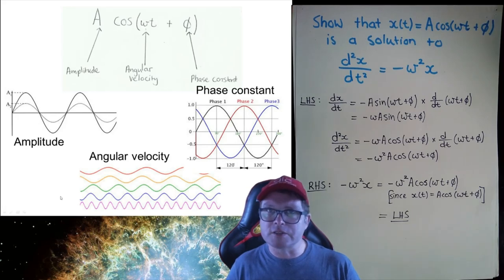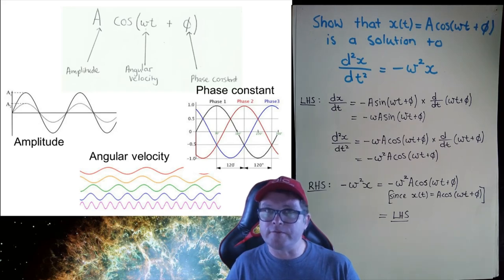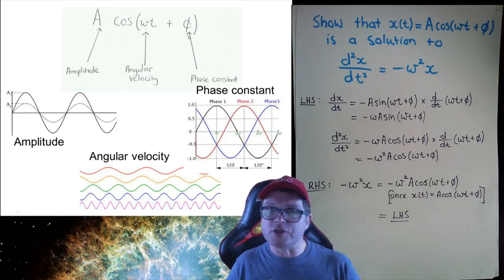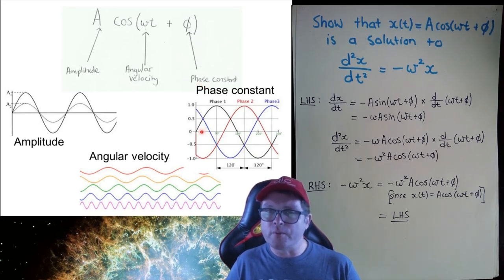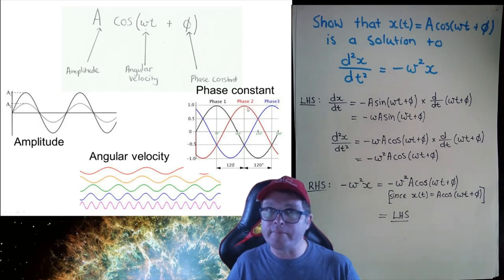The next term is the phase constant φ. What a phase constant does is shift the wave's offset. By choosing different phase constants — different offsets — you can shift the wave to the left or right, so the black wave might move and become the red wave.